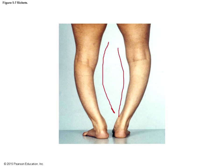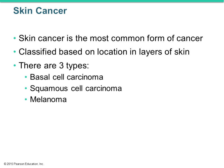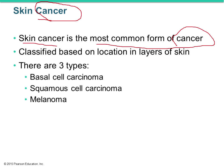Another important topic is skin cancer — the most common form of cancer overall and the number two cause of mortality. Skin cancers are classified based on the type of cell or location in the skin layer. There are three types: basal cell carcinoma, squamous cell carcinoma, and melanoma.